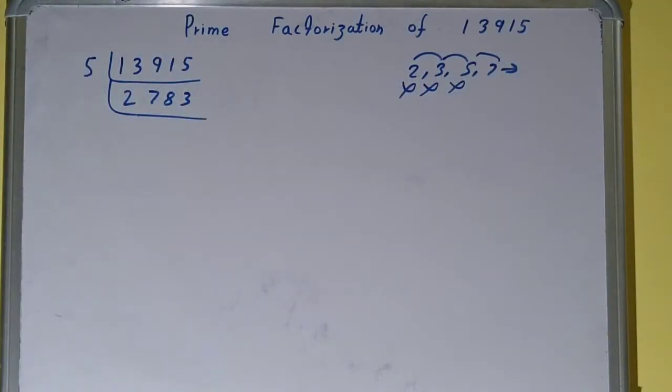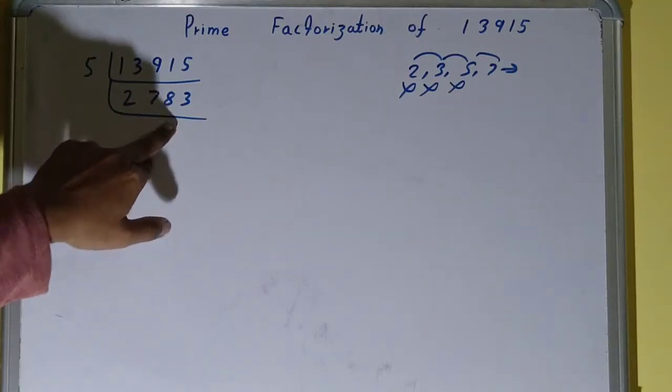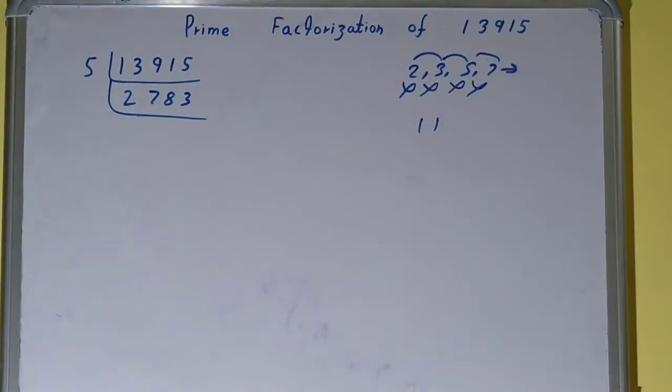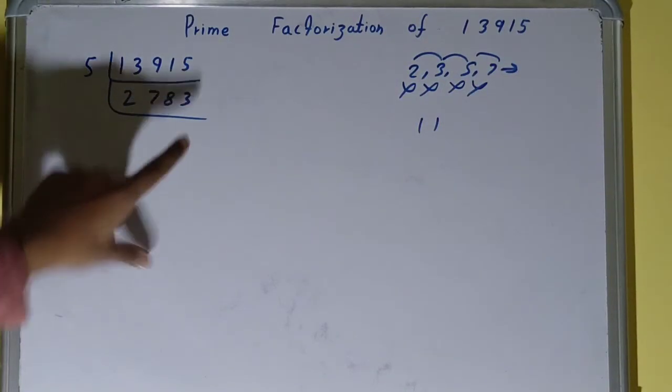Now is it divisible by 7? Not possible. Let's check with 11. Yes, with 11 it is divisible.